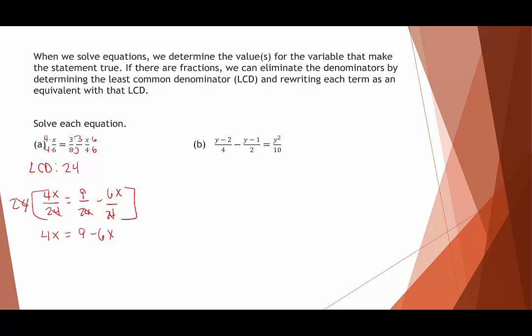This is a linear equation since there's no exponent larger than 1. We get the x's together on one side by adding 6x to both sides, giving us 10x equals 9. Dividing both sides by 10, we get x equals 9 tenths. We could plug in 9 tenths to verify, but we'll accept that as correct.